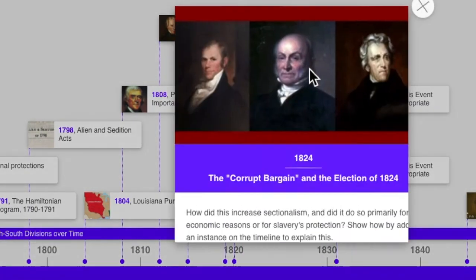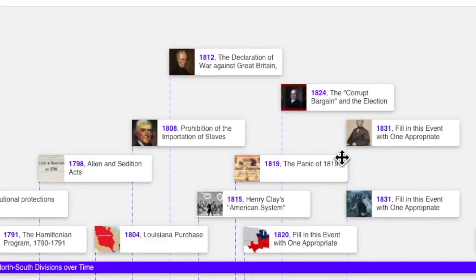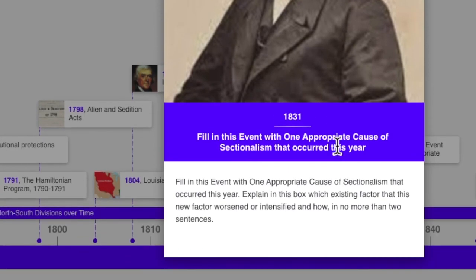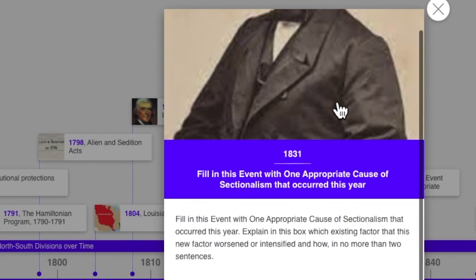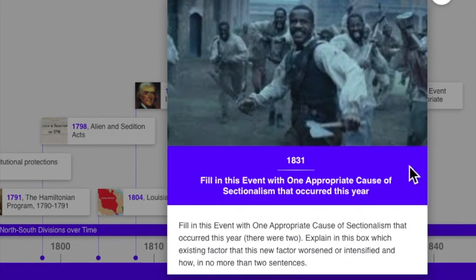In 1824, there was a corrupt bargain allegation in the election of 1824. John Quincy Adams was mainly popular with Northerners, whereas Andrew Jackson, who felt he had been mistreated in the election, was mainly popular with Southerners. For 1831, you fill in the space on the timeline with the event that occurred that year which furthered the division between North and South. There's a picture provided as a clue. Also in 1831, there was another event that caused North-South divisions, and you'll supply the name and the way it caused divisions in the space on the template.